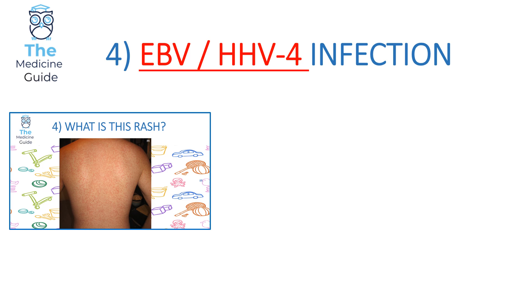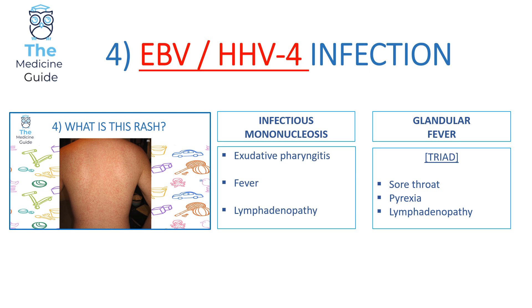Rash 4 is an example of an Epstein-Barr virus (human herpesvirus 4) infection. This viral infection can lead to either infectious mononucleosis or glandular fever. In infectious mononucleosis, patients present with exudative pharyngitis, fever and lymphadenopathy. In glandular fever, there is a triad of sore throat, pyrexia and lymphadenopathy. This rash is not a key feature of either condition, but it is important to recognise it as caused by EBV, and the presentation determines whether it is infectious mononucleosis or glandular fever.